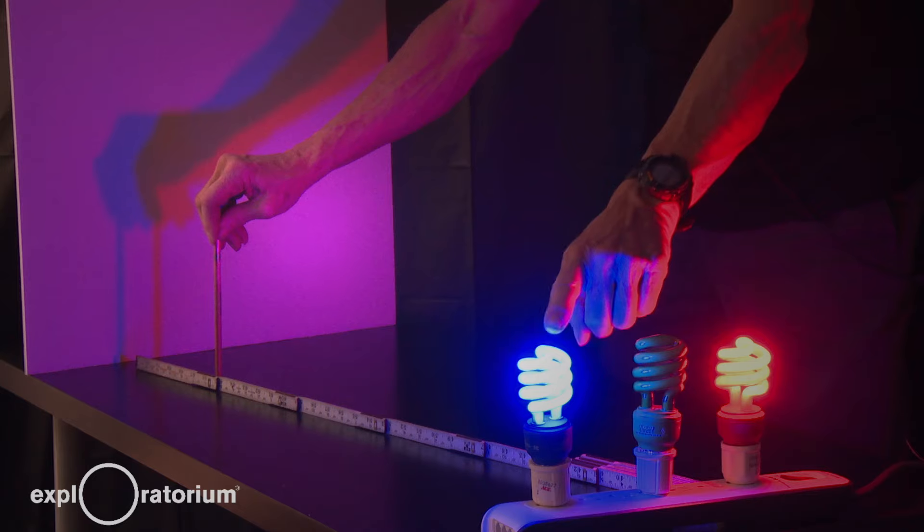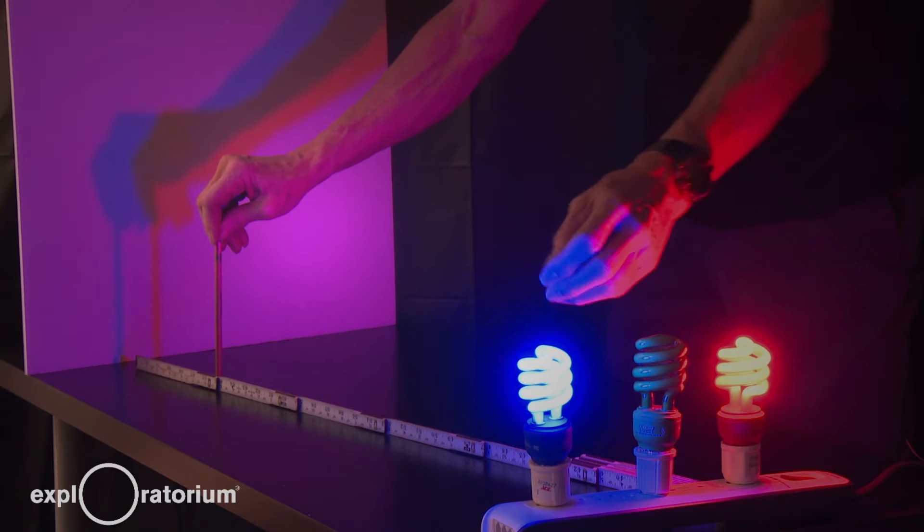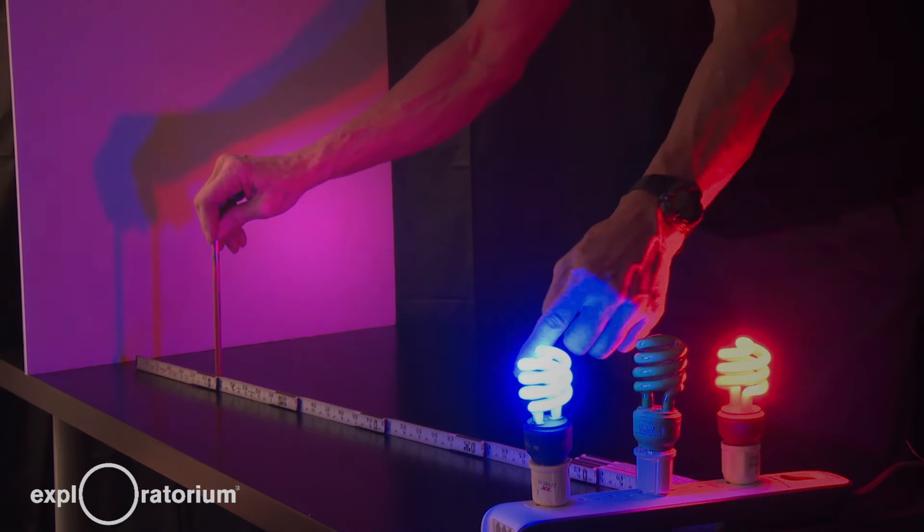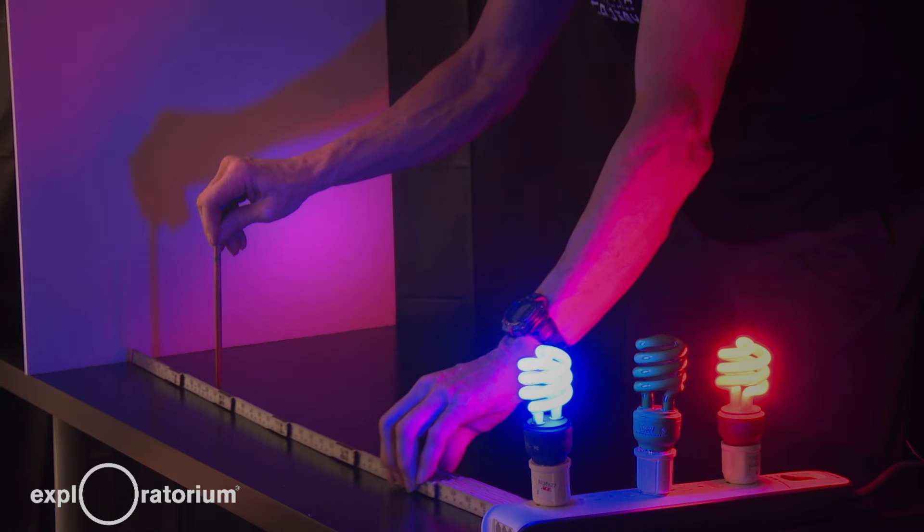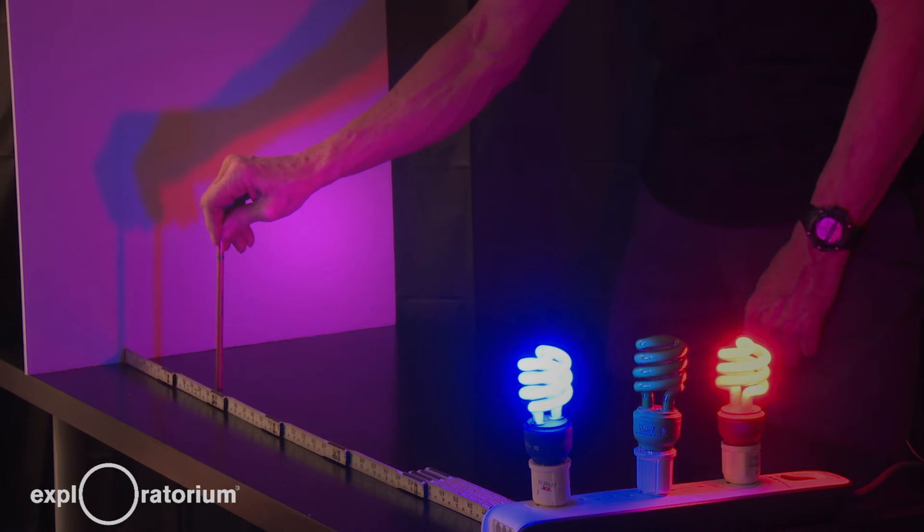However, light from the blue bulb also travels in straight lines. And its straight line misses the pencil and fills in the shadow from the red light.